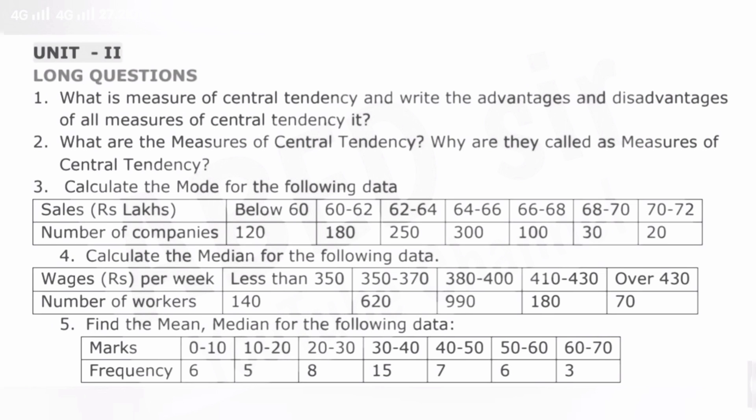From Unit 2, mean, median, and mode are compulsory — mean will definitely appear in your question paper in Part B. What is meant by measures of central tendency is also important. There will compulsorily be a problematic question from Unit 2 — either mean or median. Mean is definite. In our channel I've already uploaded explanation videos of mean, median, and mode. Pause the screen, take a screenshot of the problematic questions, and try to find out mean, median, and mode.